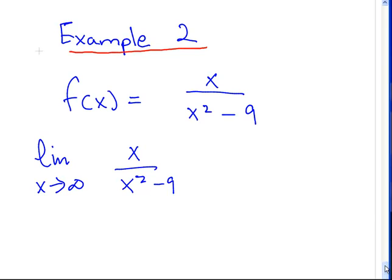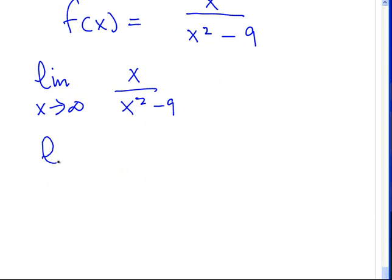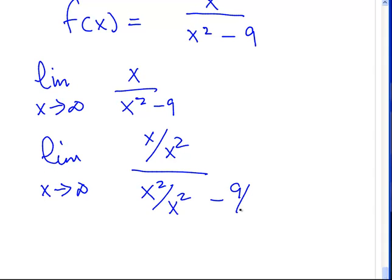Again, we use the same sort of technique. Divide down by the highest power. Limit as x approaches infinity of x over x squared, x squared being the highest power. x squared over x squared minus 9 over x squared.